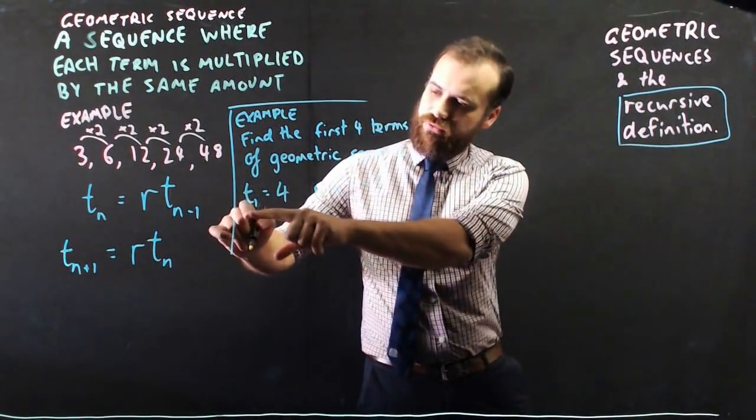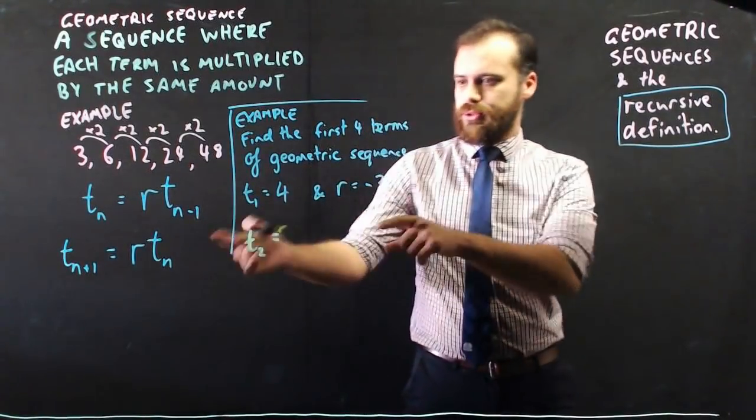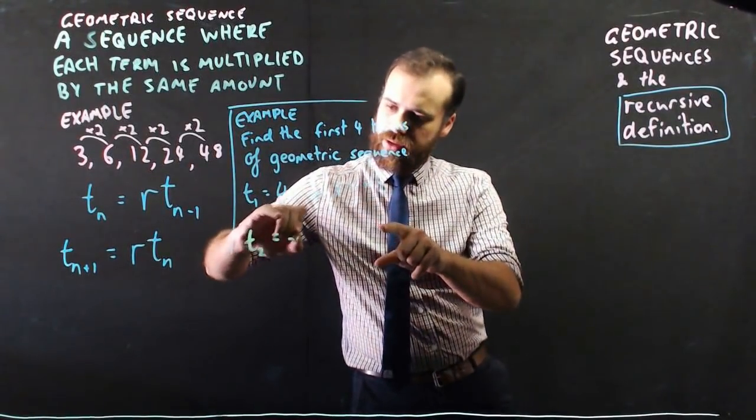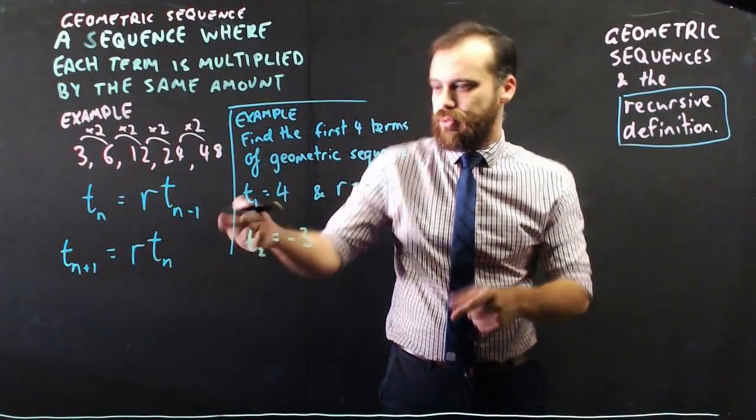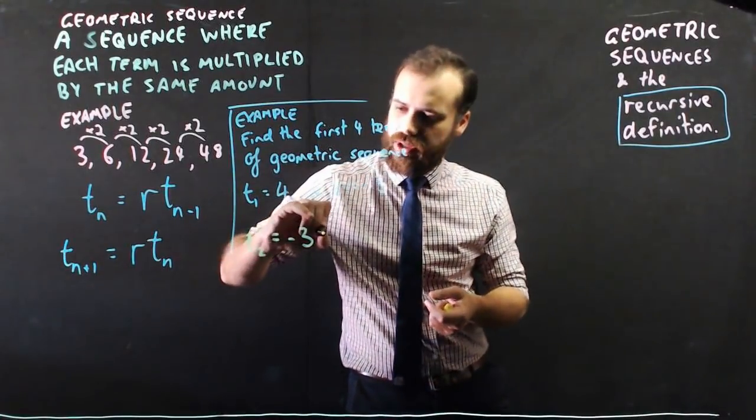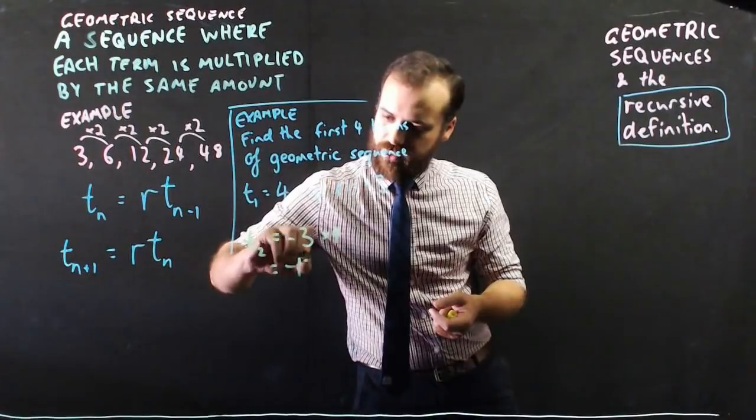Okay, so if the first term is this then term 2 is going to be equal to the common ratio negative 3 times the previous term, so times term 1, and term 1 is 4 here. Negative 3 times 4 is negative 12.